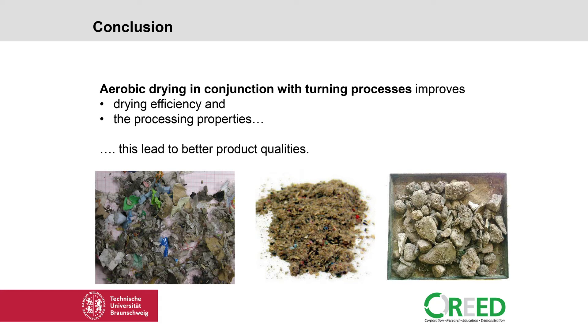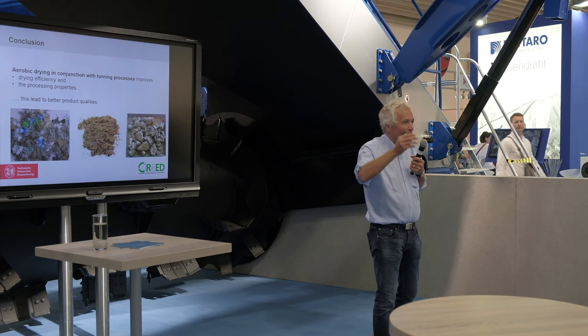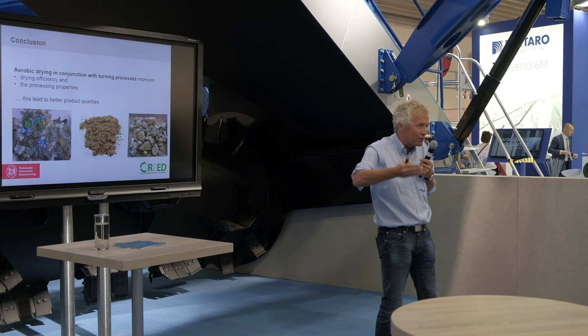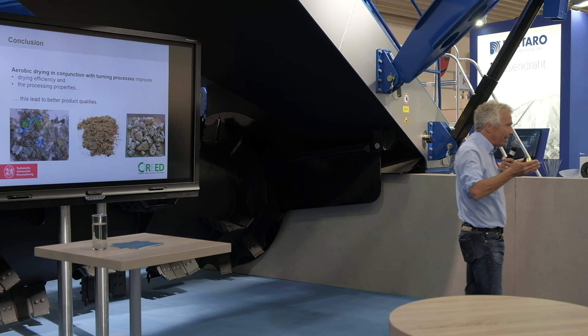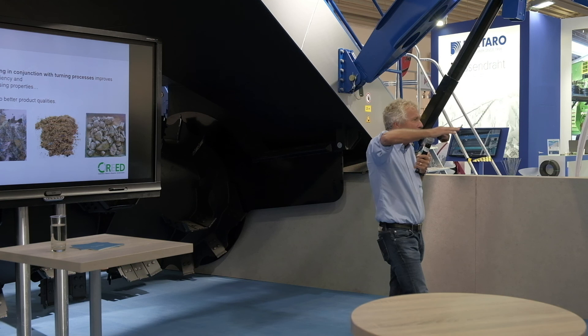The minerals separated in this process are of a quality suitable for use in construction — for example, in street construction. In summary: waste has poor quality in its original state. When you want to produce a fuel, you must treat the waste. First, reduce the water content. Second, remove components that destroy the process and reduce the quality of the cement. Thank you very much — if there are any questions, please ask.